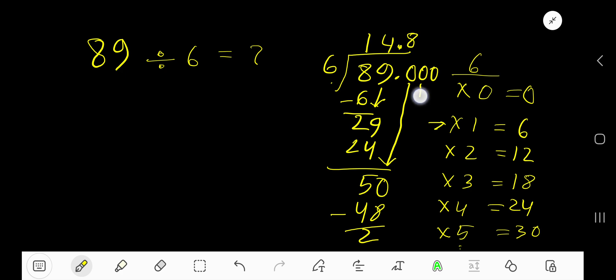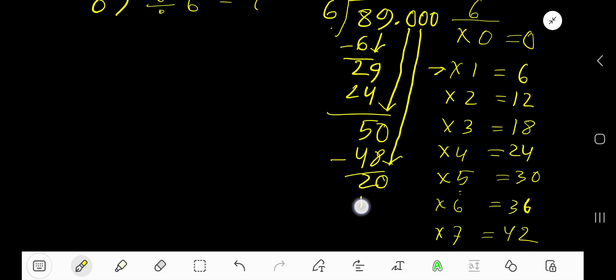Subtract to get 2. Bring down this 0, so 20. 6 goes into 20 how many times? 3 times. 3 times 6 is 18.